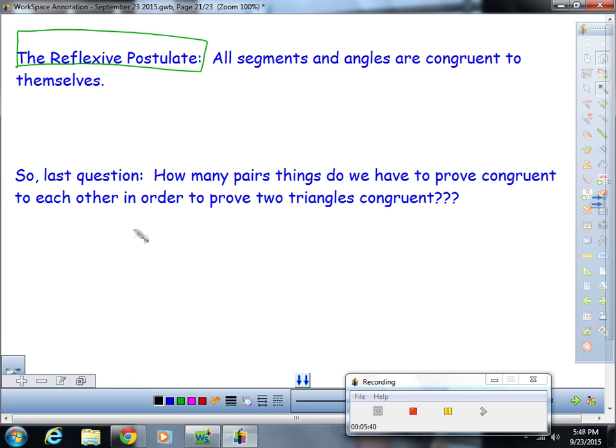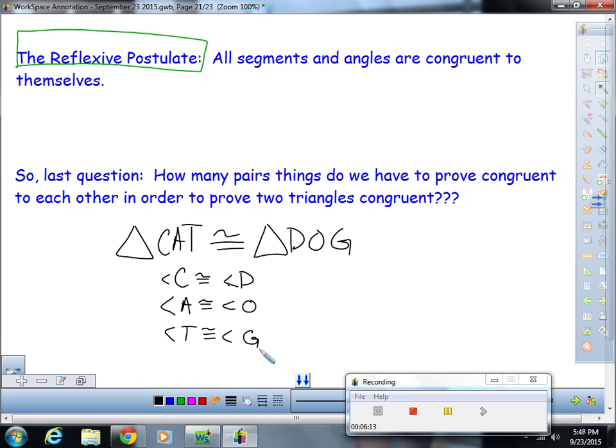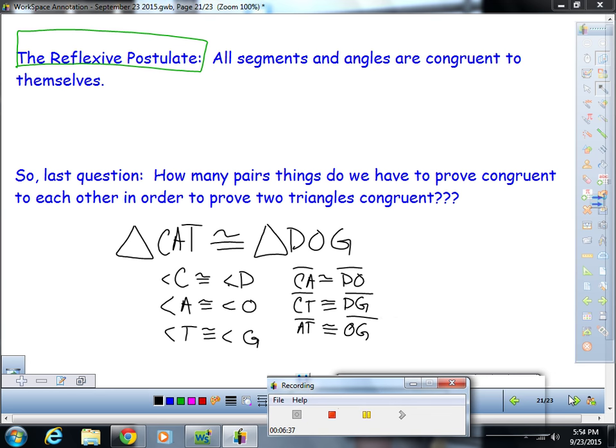So, here's the last thing to think about. If I did have triangle CAT congruent to triangle DOG, how many pairs of congruent things would I have to prove congruent in order to prove this? Well, I'd have to say that angle C is congruent to angle D, and angle A is congruent to angle O, and angle T is congruent to angle G. I'd also have to say that segment CA is congruent to segment DO, that segment CT is congruent to segment DG, and that segment AT is congruent to segment OG.